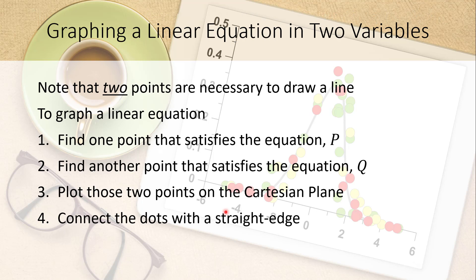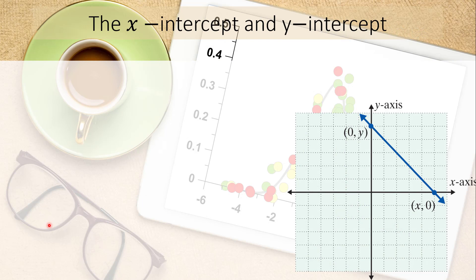To graph a linear equation, pick two points and connect the dots. Since two points are necessary to draw a line, we find two ordered pairs that satisfy the equation — call them P and Q — plot them on the Cartesian plane, and connect them. As long as c is not equal to zero, the x-intercept and y-intercept are the best two points to use because they are the easiest to compute.